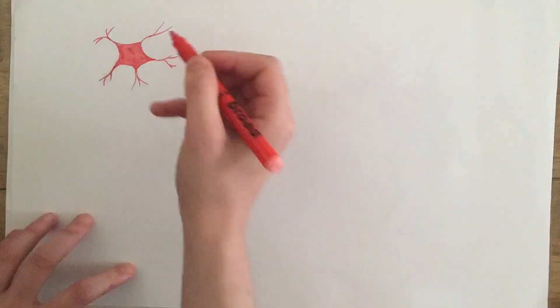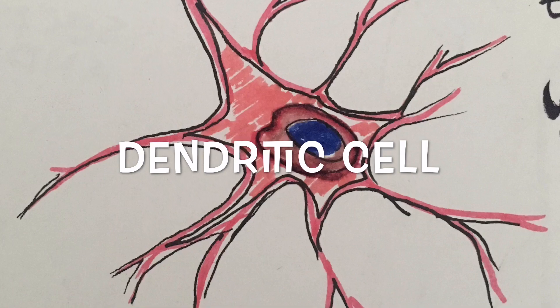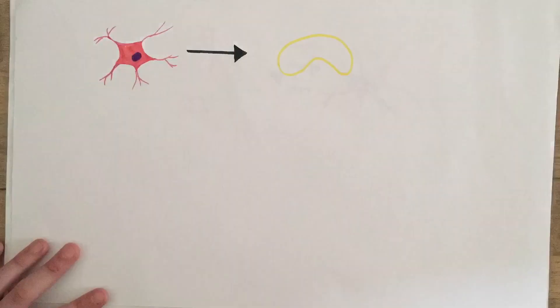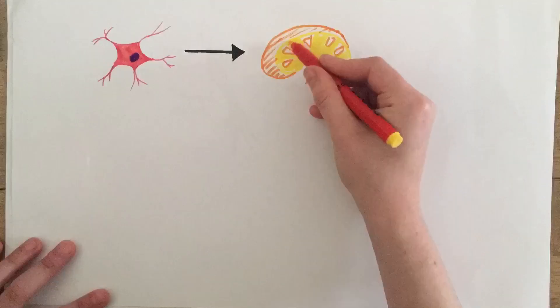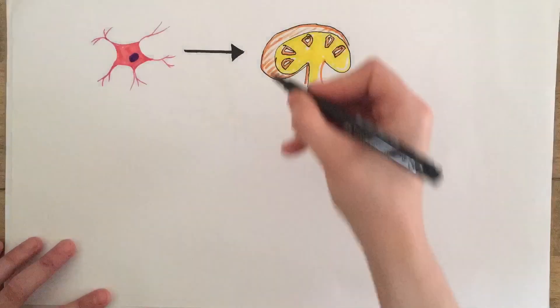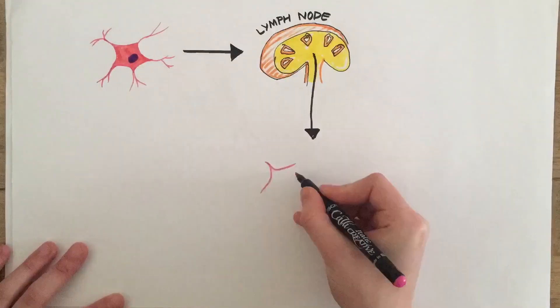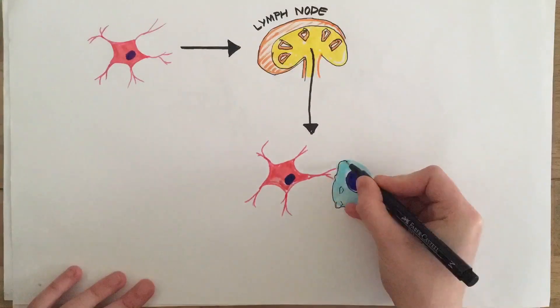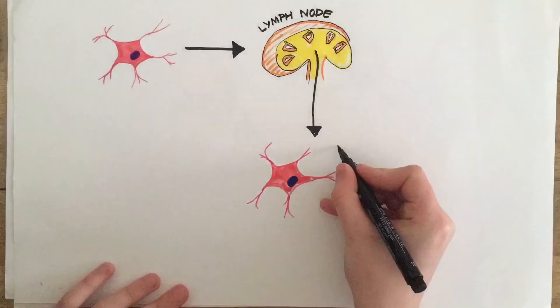It is thought that when a dendritic cell comes into contact with an antigen, it travels to the lymph node. Within the lymph node, the dendritic cell interacts with the naive T cell. This results in the T cell becoming an activated memory T cell.